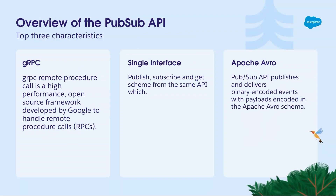For those who haven't played with the PubSub API, gRPC is Google's Remote Procedural Call — a protocol Google developed to make it more transparent for developers, more scalable, and easier to manage events and streaming. It's higher performance, and because it's encoded in Apache Avro format, it's quicker to serialize and deserialize. The single interface means that to achieve what PubSub API does in one API — publish, subscribe, and get the schema — you'd otherwise need the REST API or Bulk API to publish, streaming API to subscribe, and metadata API to get the schema.